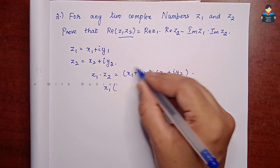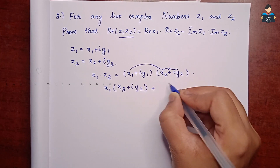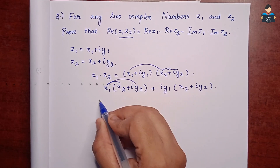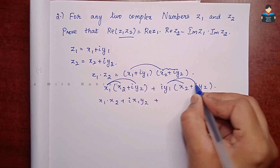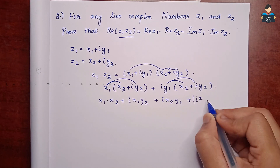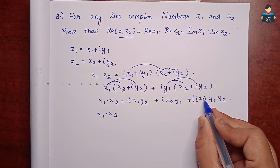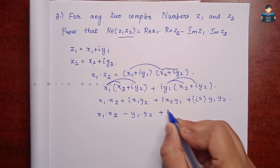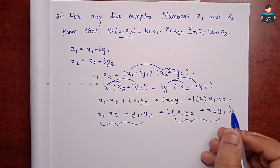Now we compute Z1 into Z2: (x1 plus iy1) into (x2 plus iy2). Expanding: x1 x2 plus i x1 y2 plus i x2 y1 plus i squared y1 y2. Since i square is minus 1, this becomes x1 x2 minus y1 y2, plus i times (x1 y2 plus x2 y1). So the real part is x1 x2 minus y1 y2, and the imaginary part is x1 y2 plus x2 y1.